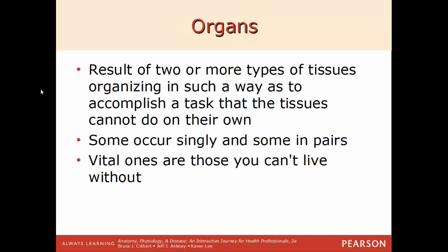Now we'll move on to organs. An organ is the result of two or more different types of tissue working together with a similar function — a function the tissues on their own can't perform. Some organs occur in pairs, like lungs or kidneys; some occur singly, like the brain or heart. There are vital organs you cannot live without, and others — like the appendix, spleen, or gallbladder — that can be removed because other parts of the system compensate.